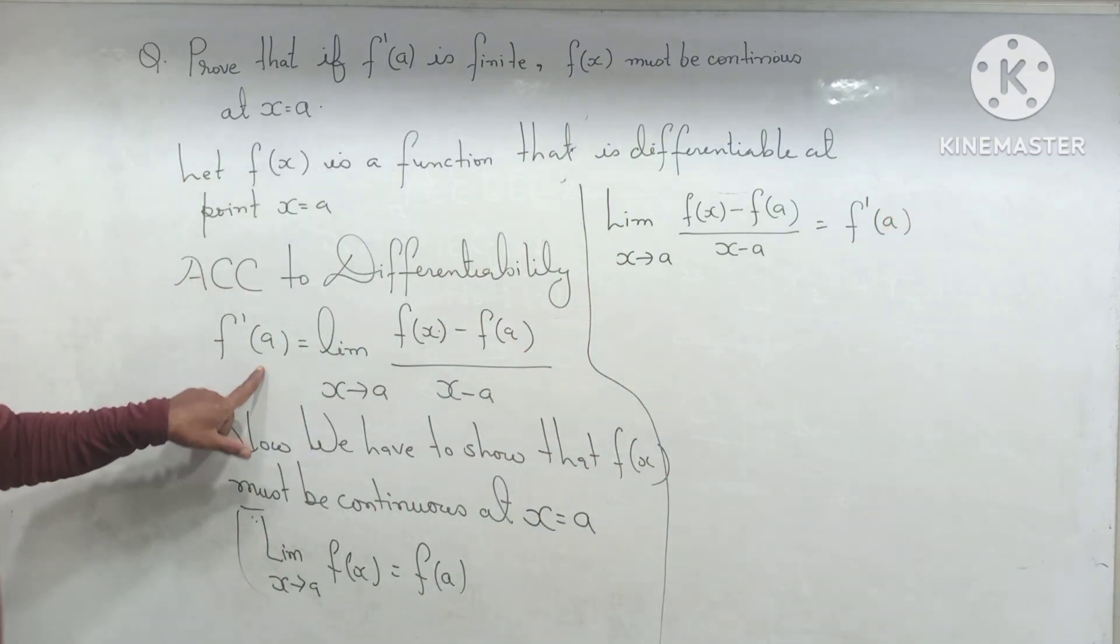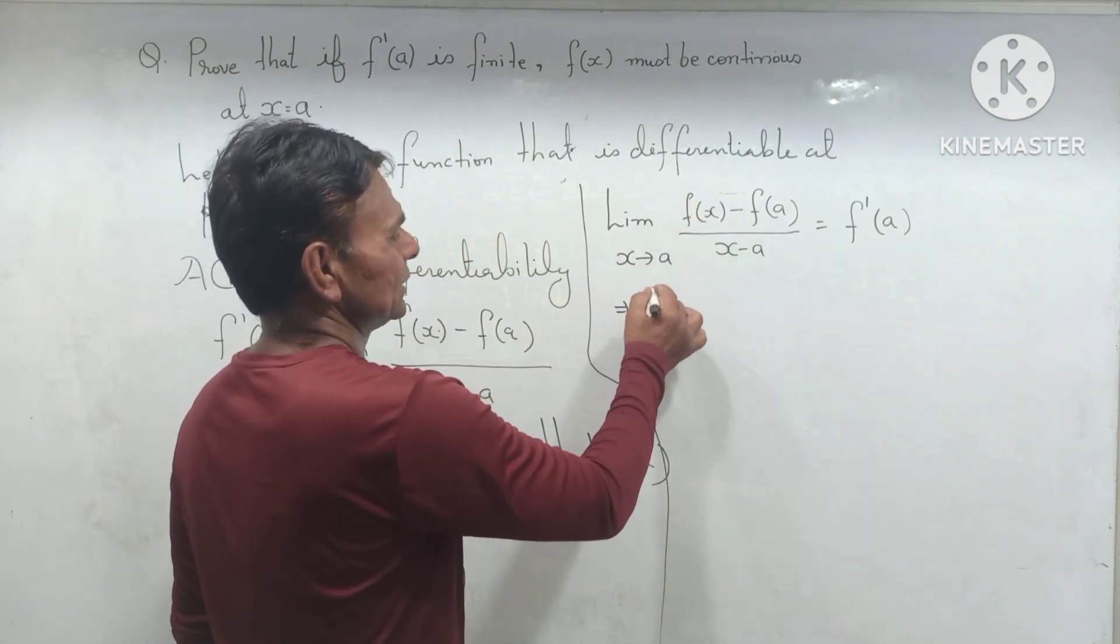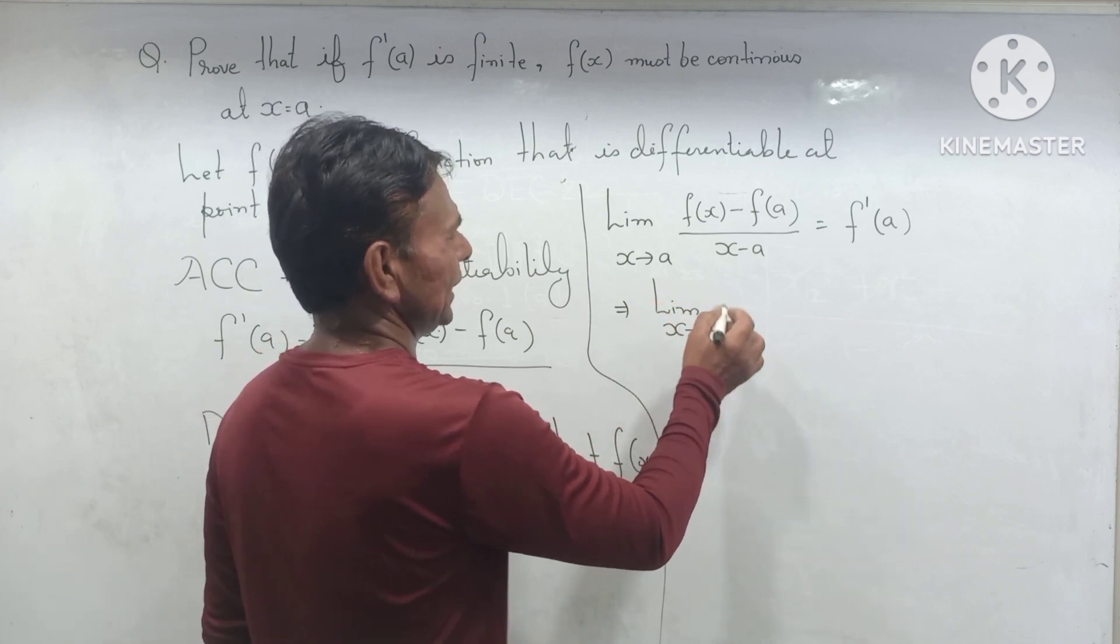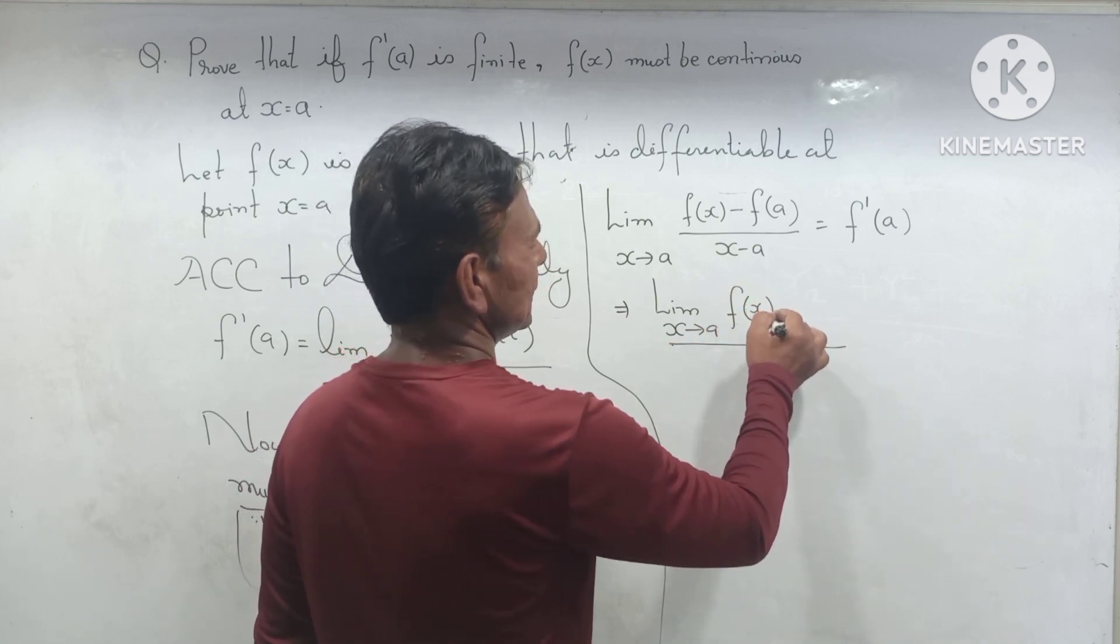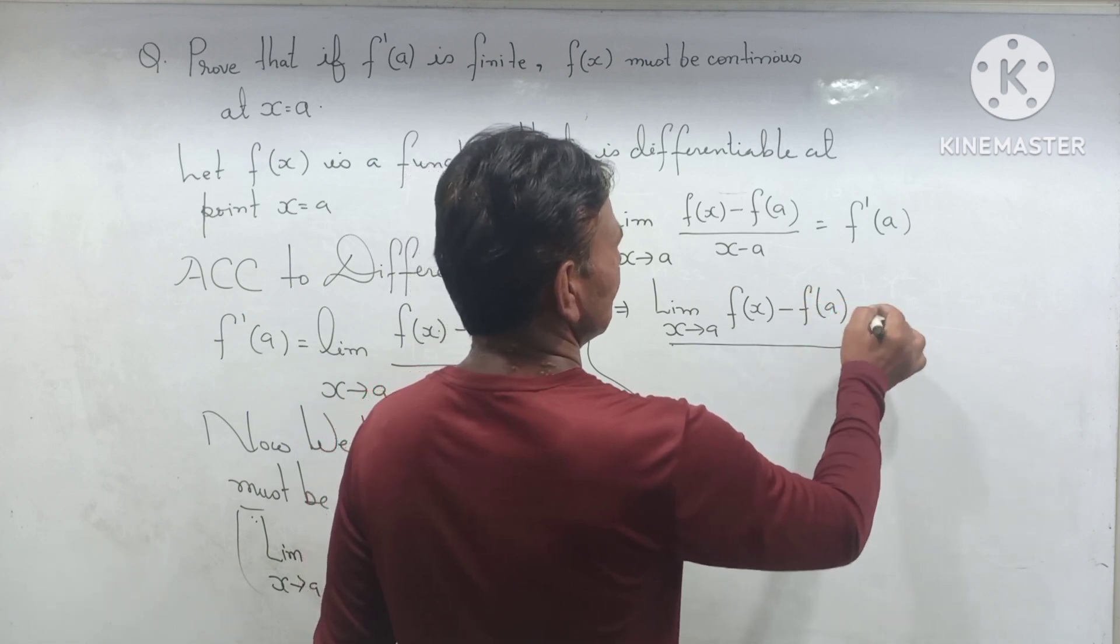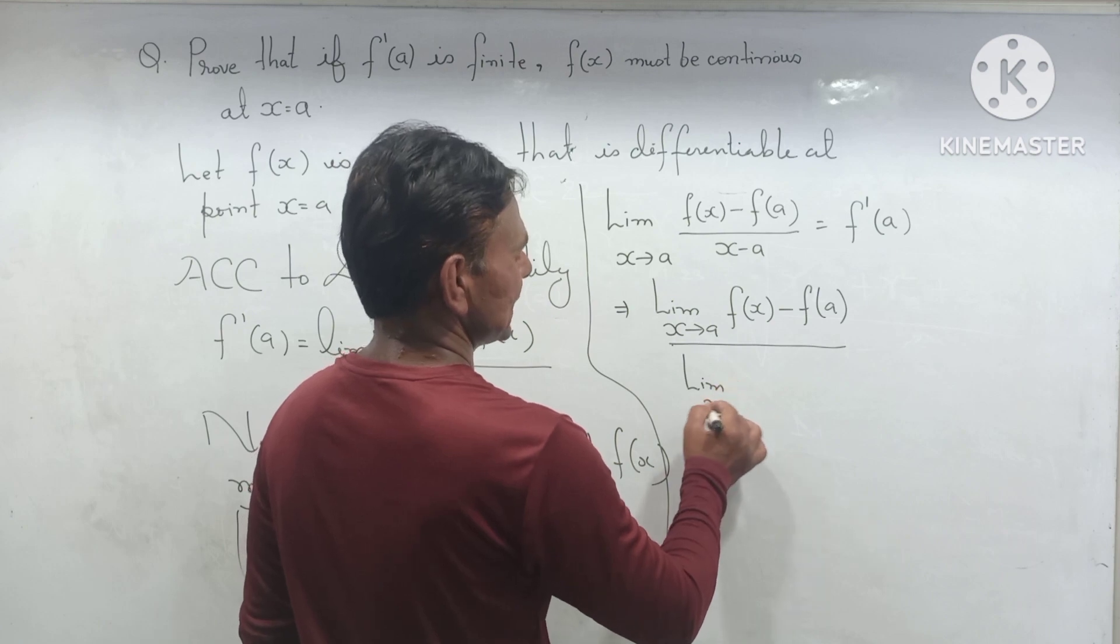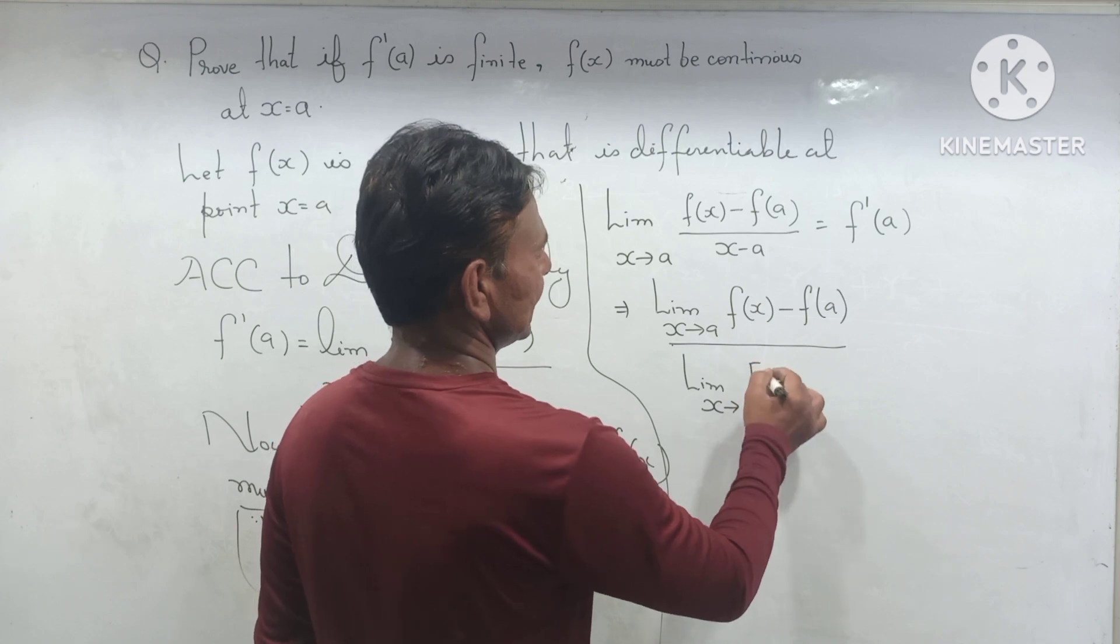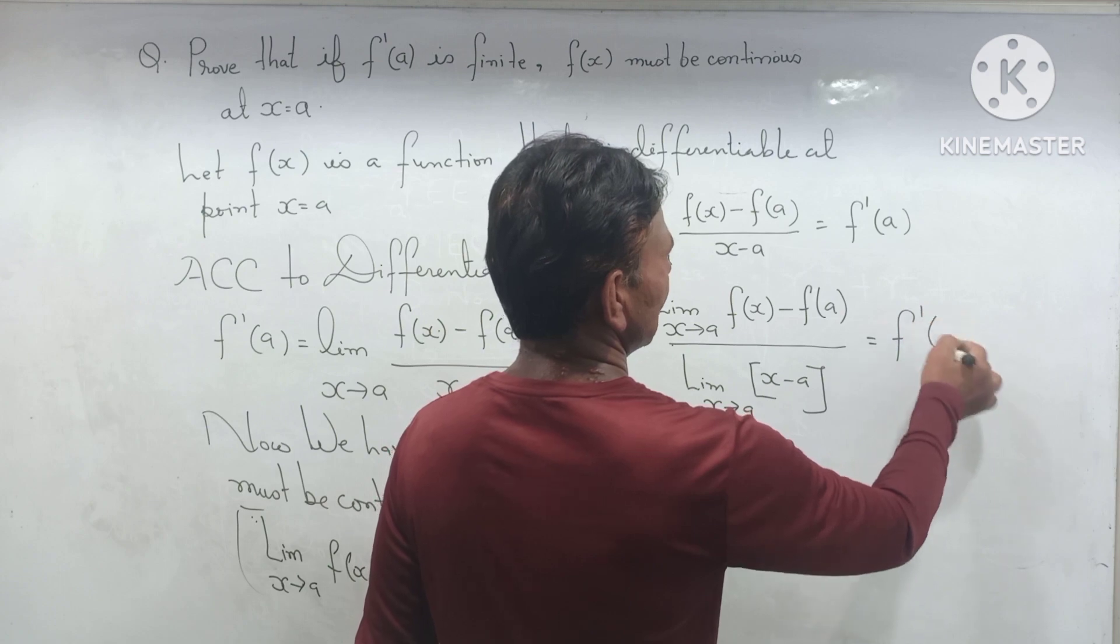We will take it further. Limit as x tends to a, f(x) minus f(a). So limit as x tends to a, you can do x minus a equal to f dash a.